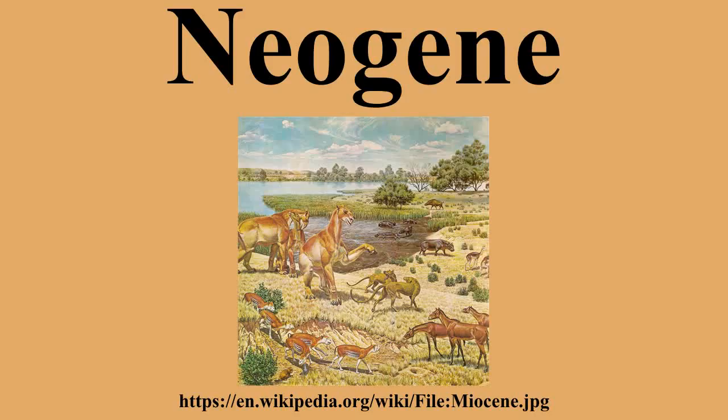During this period, mammals and birds continued to evolve into roughly modern forms, while other groups of life remained relatively unchanged. Early hominids, the ancestors of humans, appeared in Africa near the end of the period.